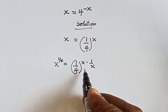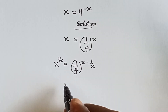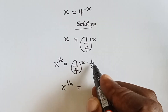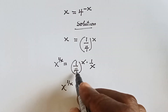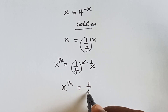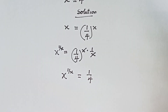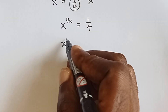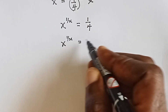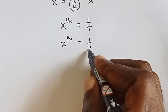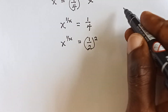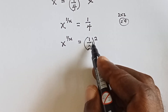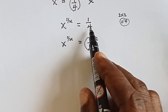Because whatever you do to this side, you must do to the other side too. So we have x raised to power 1 over x equals to 1 over 4. Now, another way we can write 1 over 4 is to write 1 over 2, everything raised to power 2, because 2 times 2 will give us 4. When you open this bracket, you have 1 over 4.